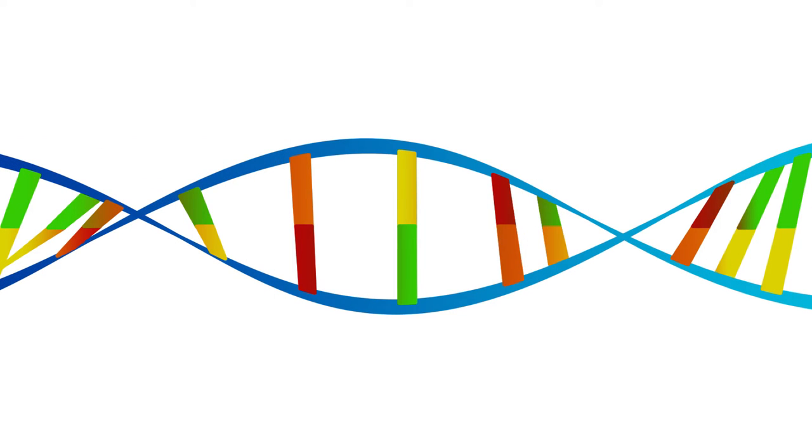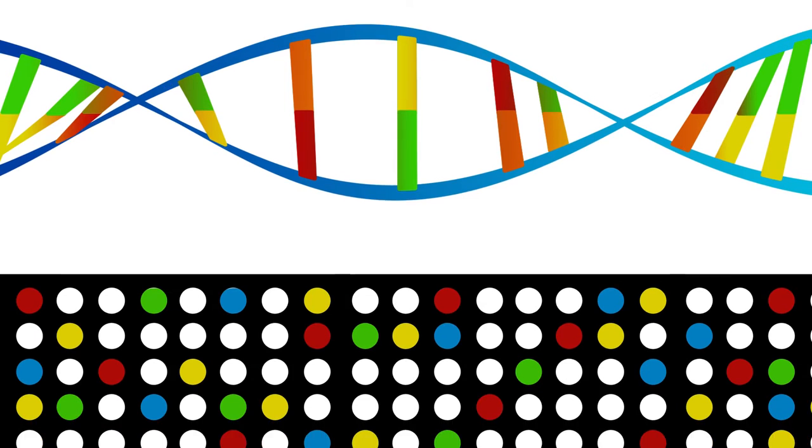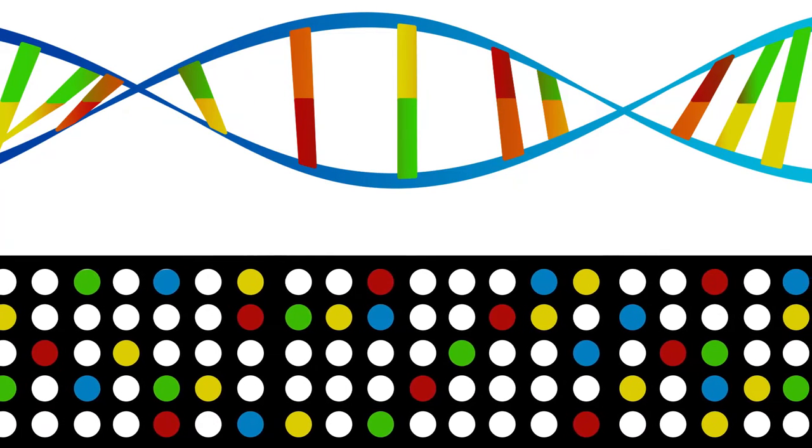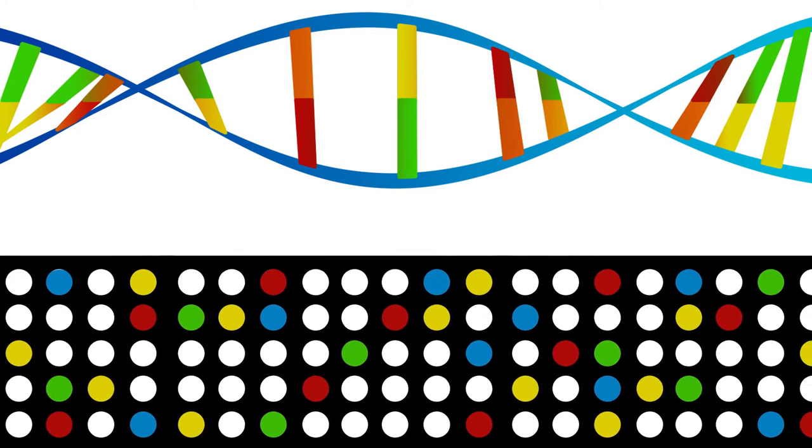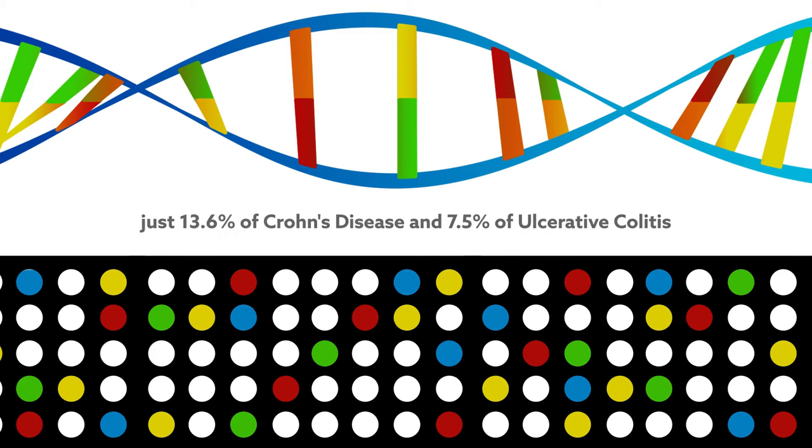While environmental factors play a role, so do genes. Scientists have identified more than 160 positions in the genome where variants can increase the risk of developing the disease, but they still explain just a fraction of the genetic contribution.